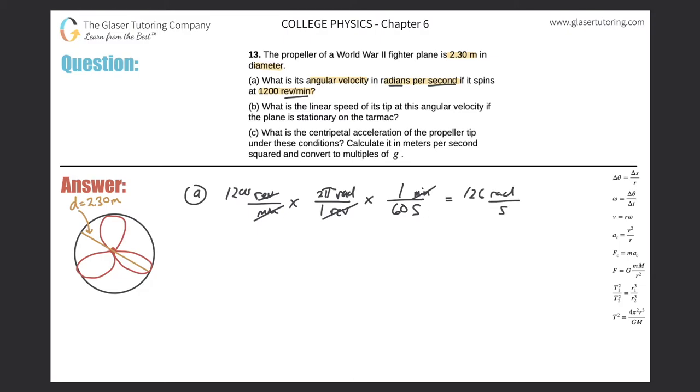That's the answer for letter A. Let's take a look at letter B. Now letter B is asking: what is the linear speed, aka tangential velocity, of its tip at this angular velocity if the plane is stationary? I just gave you the big hint there - this is really finding v.